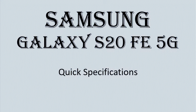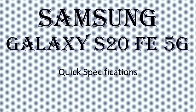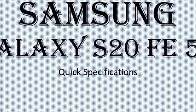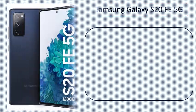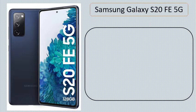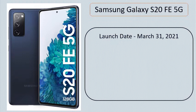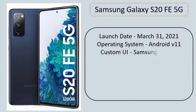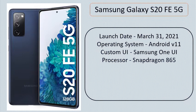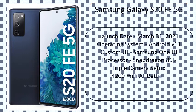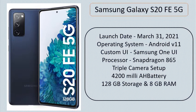Samsung Galaxy S20 FE 5G Quick Specifications. Launch Date: 31 March 2021. Operating System: Android V11. Custom UI: Samsung One UI. Processor: Snapdragon 865. Triple Camera Setup, 4200 mAh Battery, 128GB Storage and 8GB RAM.